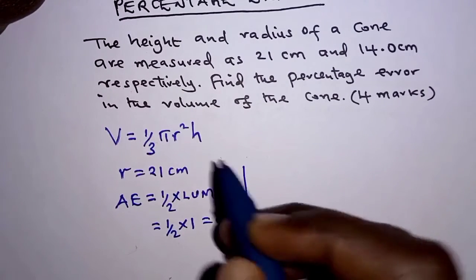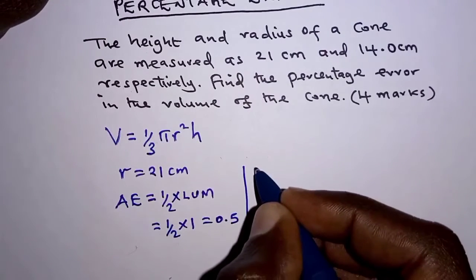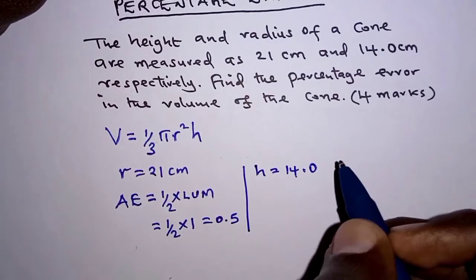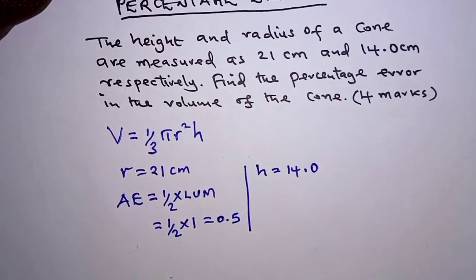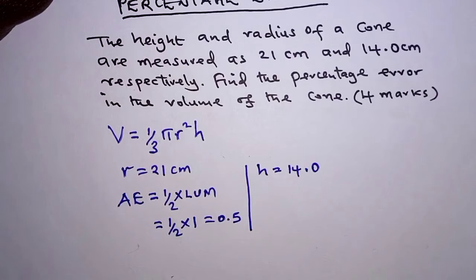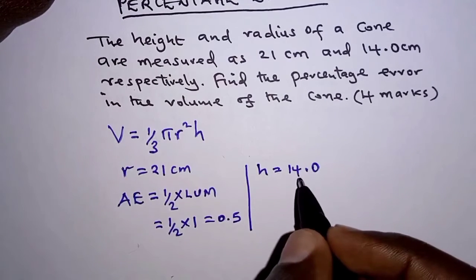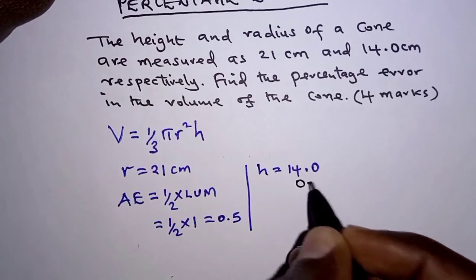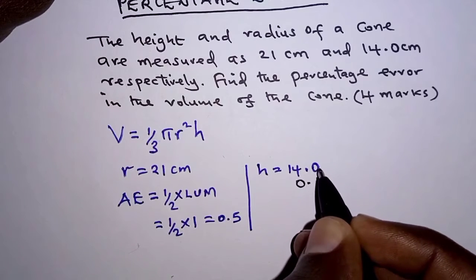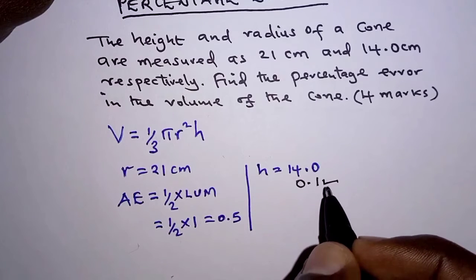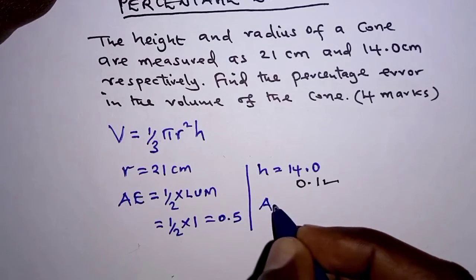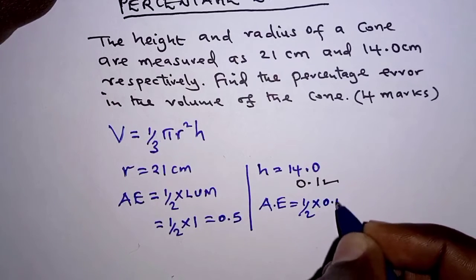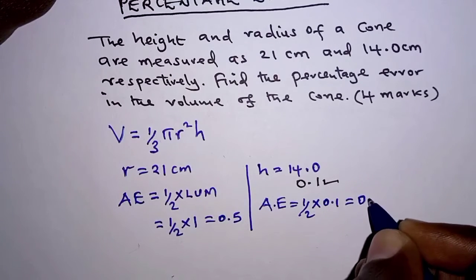We also need to consider the height, because that is the second measurement. The height is 14.0 — remember, it is to 1 decimal place. To determine the least unit of measurement, we look at it this way: it is to 1 decimal place, and if we place 0 immediately below 4, then 0.1, because this is the last digit, becomes the least unit of measurement. So the absolute error for this measurement is half times 0.1, which gives us 0.05.